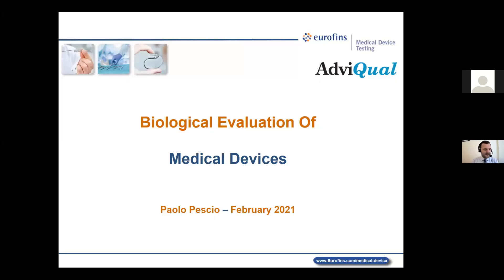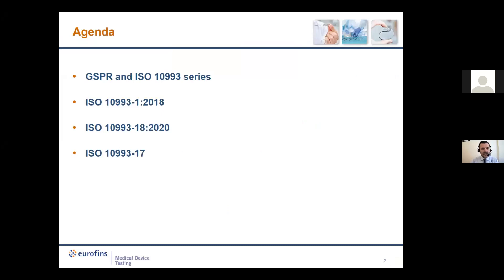Today we'll evaluate a medical device from another perspective, starting with the MDR and the general safety and performance requirements. We'll briefly cover how the ISO 10993 series fits the purpose, then look at ISO 10993-1 of 2018 and the main changes in our approach to biological evaluation. The most relevant change is the request for chemical and physical information as a prerequisite. We'll also look at the brand new ISO 10993-18 of 2020 and a flavor of the toxicological risk assessment covered by ISO 10993-17.